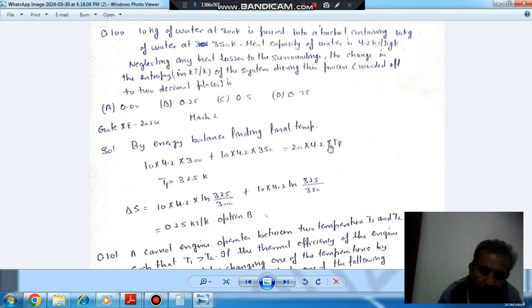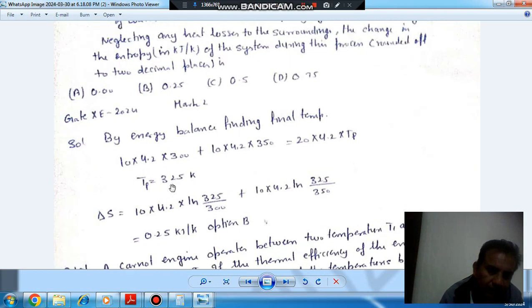Both make 20 kg and specific heat is the same. Suppose Tf is the final temperature, so this is the final energy. This is the initial energy of two samples and the total heat energy of combined system, so Tf comes out as 325 Kelvin.